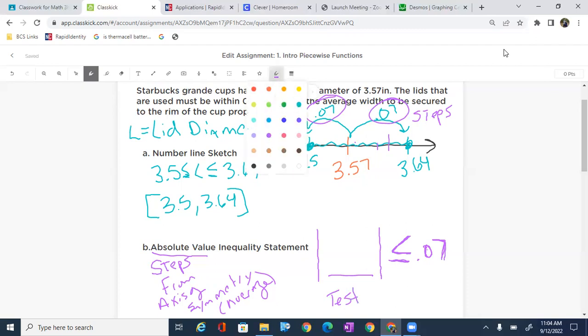So what I mean by that is simple. If I was to take, for example, the number 3.65, let's say we had a lid that was 3.65. Would that work? Well, we know it wouldn't work. It's bigger than 3.64, but how would we test it? We'd simply test it by saying 3.65 minus 3.57. We would subtract to see if it gives us that 0.07. But in reality, what that'll give us is 0.08 and that will not work.